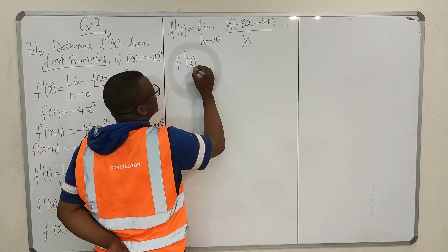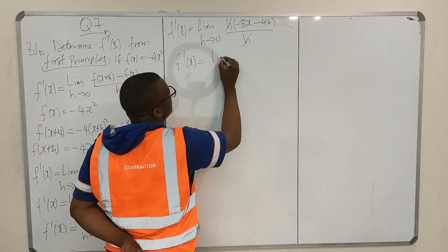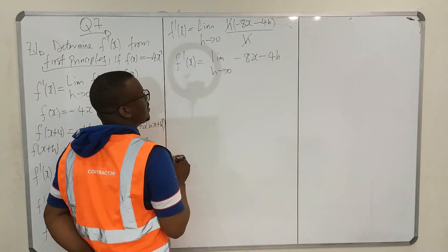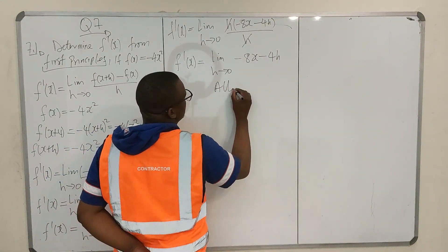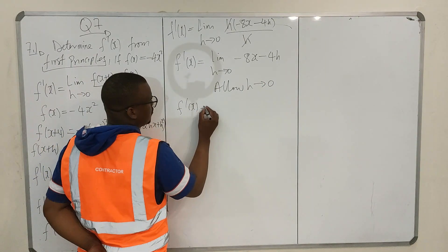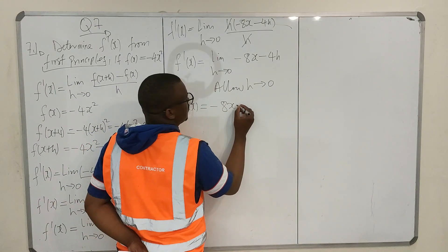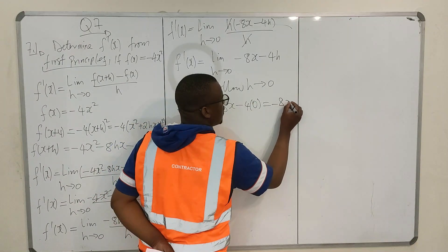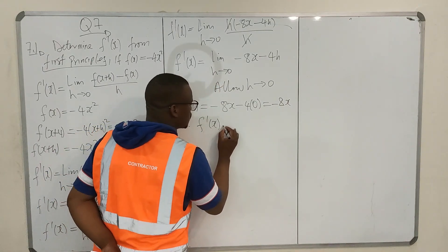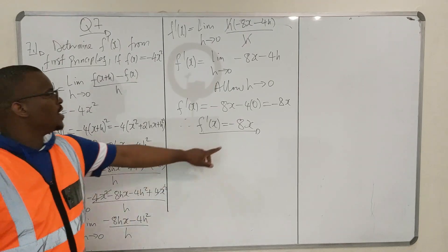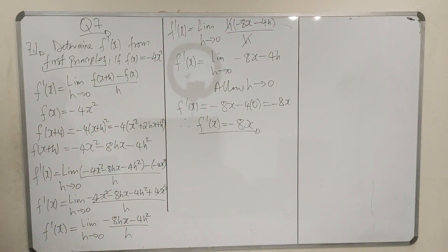So f prime of x equals the limit as h goes to 0 of minus 8x minus 4h. Once you allow h to go to 0, f prime of x equals minus 8x minus 4 times 0, which equals minus 8x. So the derivative with respect to x of our function f is equal to minus 8x.